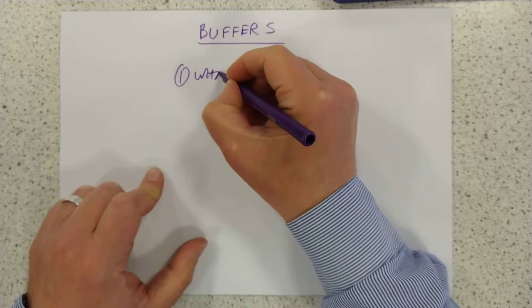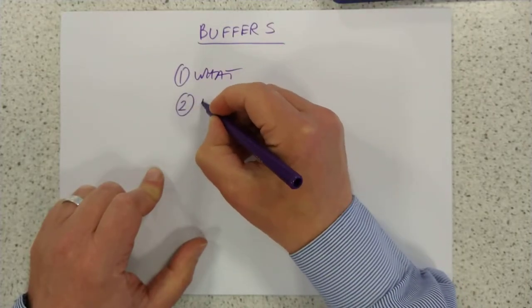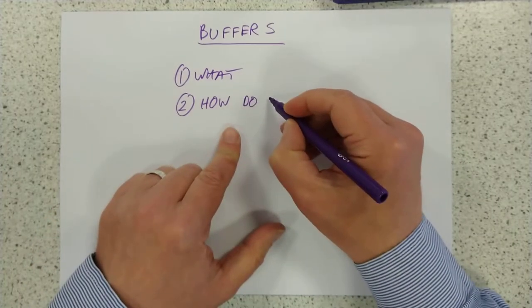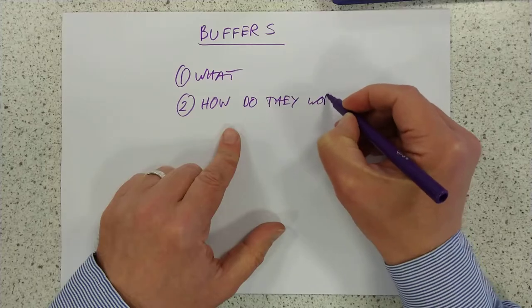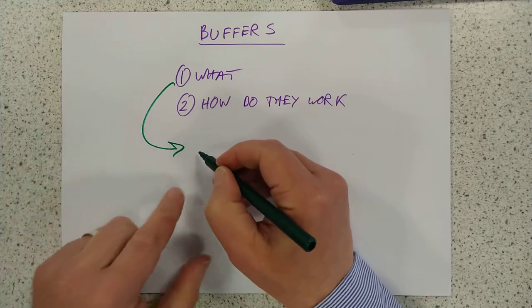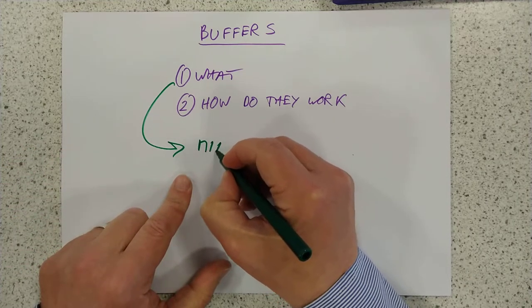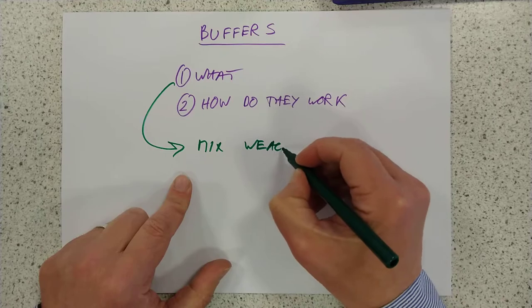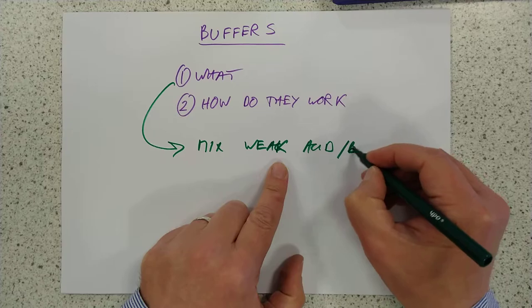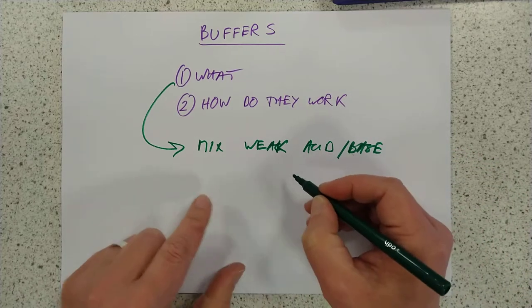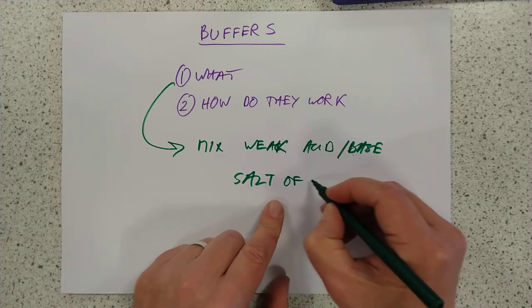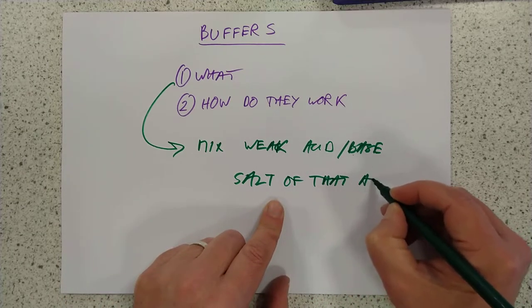Let's start with what's in a typical buffer. And number two, how do they do that voodoo that they do so well? How do they work? Let's answer one first of all, because it's relatively straightforward. The simple answer to that is it's a mixture of a weak acid, weak doesn't have a C in it, weak acid or base, and a salt, usually of the same acid or base. So a salt of that acid or base.